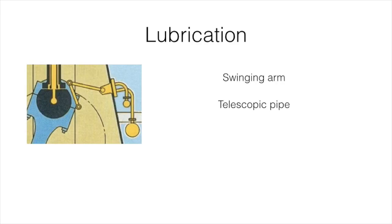The telescopic pipe follows the crosshead from top dead center to bottom dead center, supplying oil as the crosshead is riding up and down the crosshead guides.